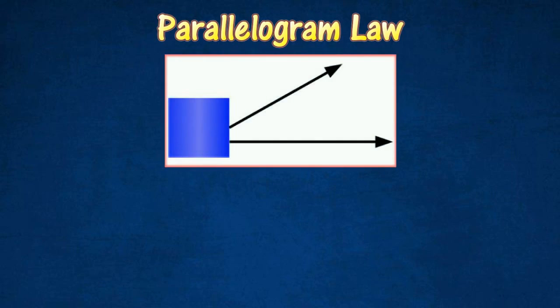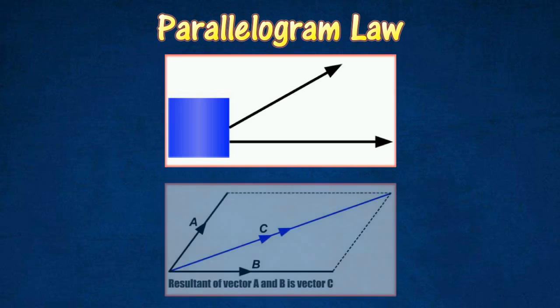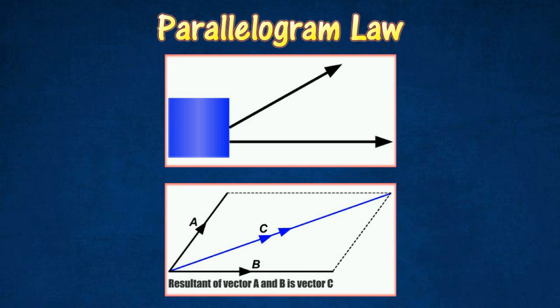Vectors that act at an angle are added geometrically by the parallelogram law, which ensures that their magnitudes as well as their directions are considered. The two vectors to be added are drawn to scale as the two adjacent sides of a parallelogram. The parallelogram is completed, and the resultant of the two vectors is represented by the diagonal of the parallelogram.